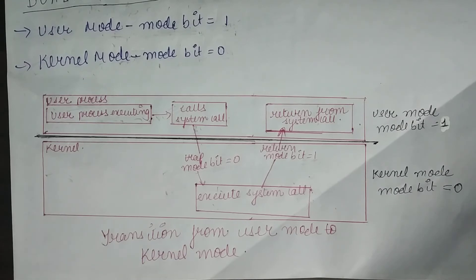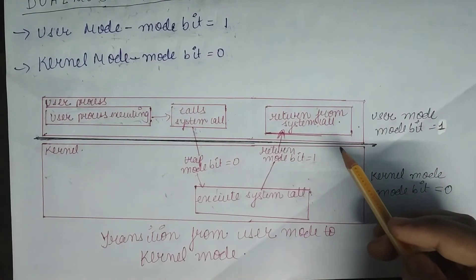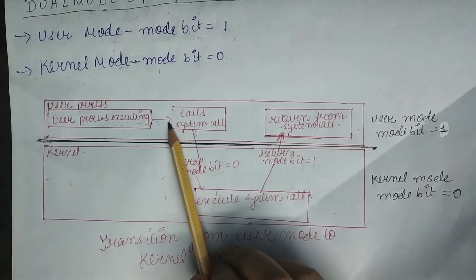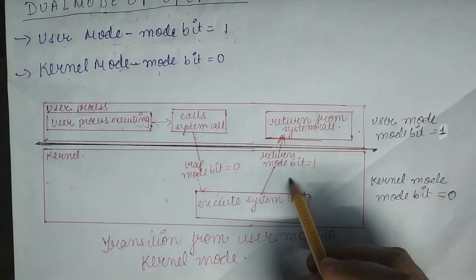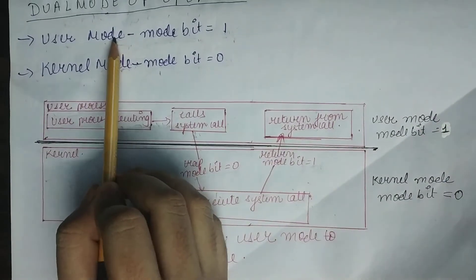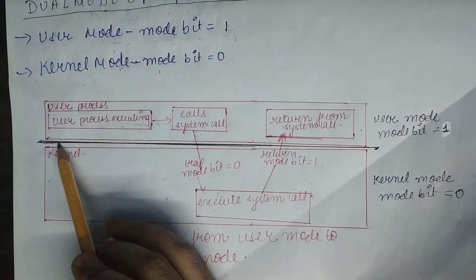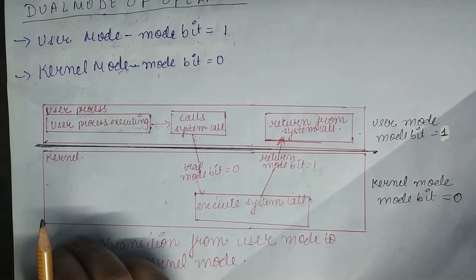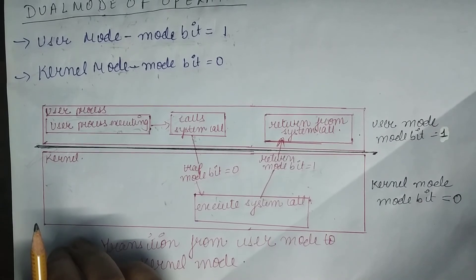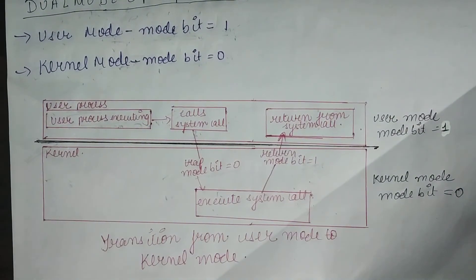These are the problems that can happen when you have only one mode of operation. Another benefit of dual mode is: suppose due to some problem your application program stops working — it will not lead to a system crash, because your application program was running in user mode, so the operating system will handle that situation and eventually close that program. So it will not lead to a system crash. Whenever any user program is running it will always run in user mode, and whenever the operating system takes control it is always in kernel mode. If the user process wants any service from the operating system it can do that using a system call, at which point user mode switches to kernel mode and then switches back once execution of that system call is done.